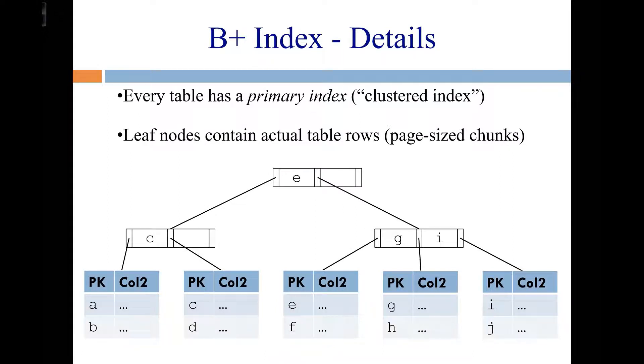Remember from last lecture, I talked about how every table automatically has a primary index. And that's just an index built on the primary key of the table. It's also sometimes called the clustered index, and you may hear that term. So the primary index, though, is just a B plus tree.